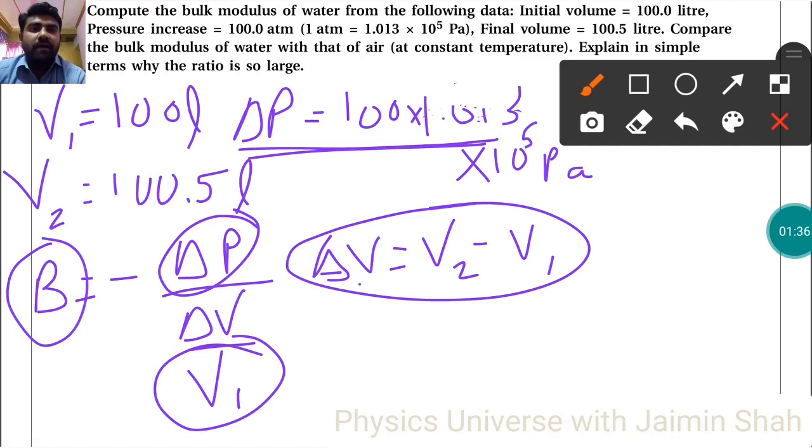Why is the bulk modulus so large? Because the pressure is of the order 10^7. When pressure is high and volume difference is low, we get a large bulk modulus.